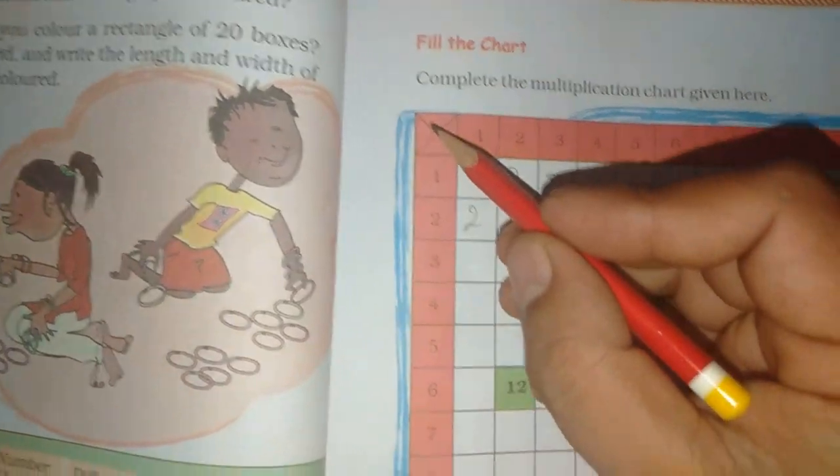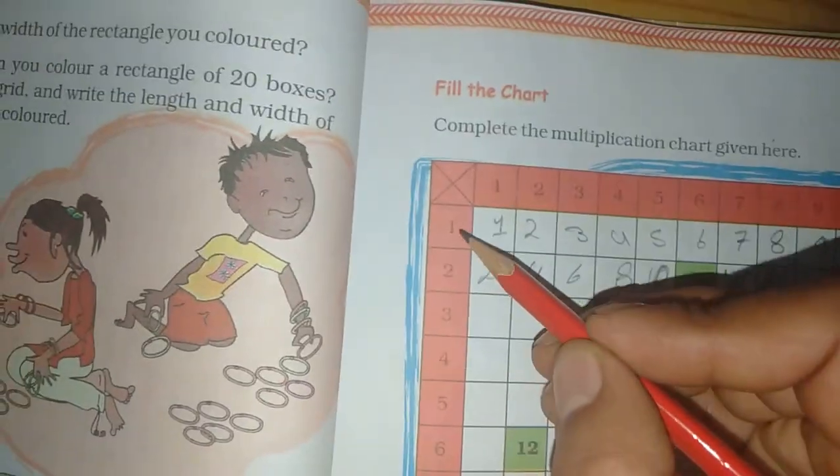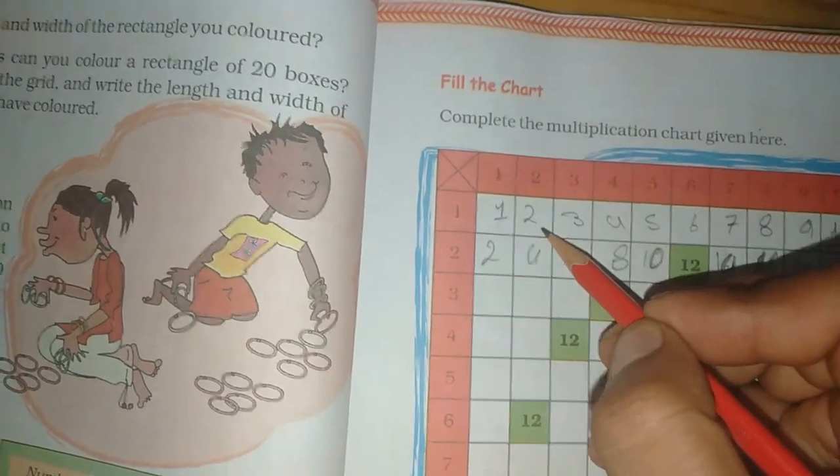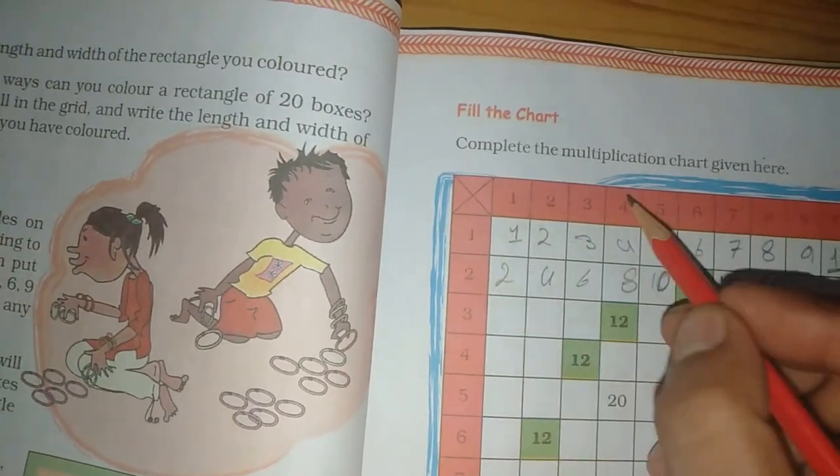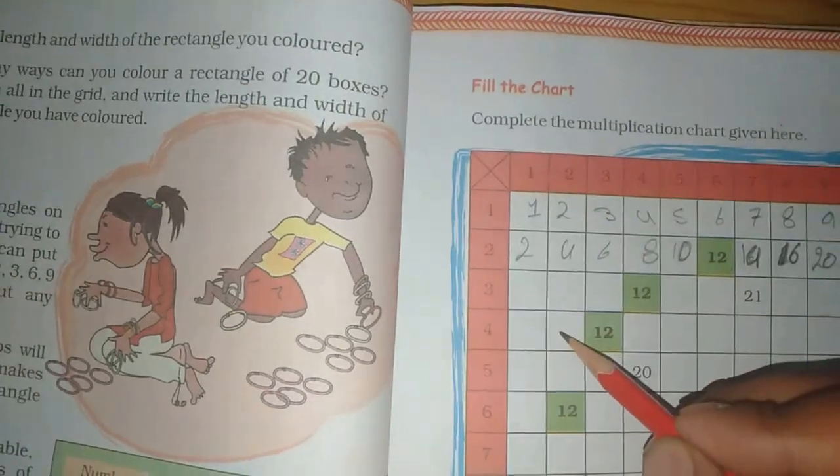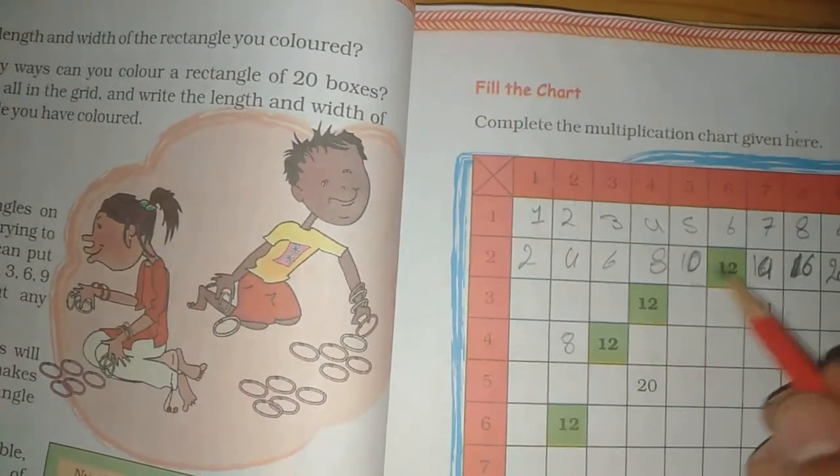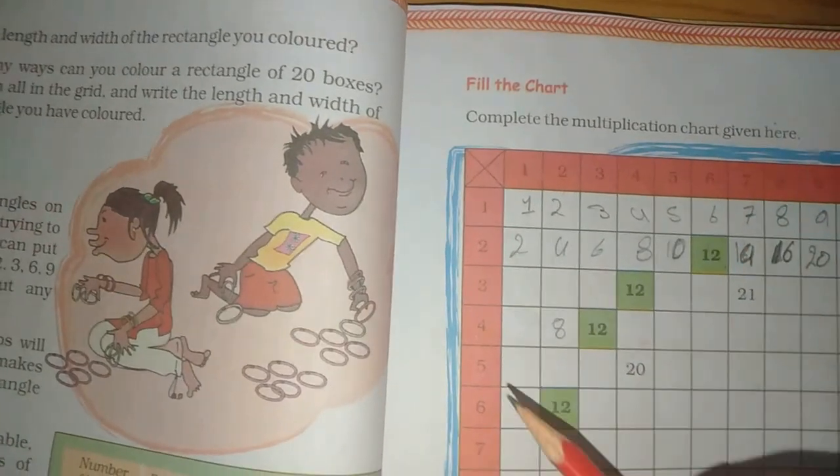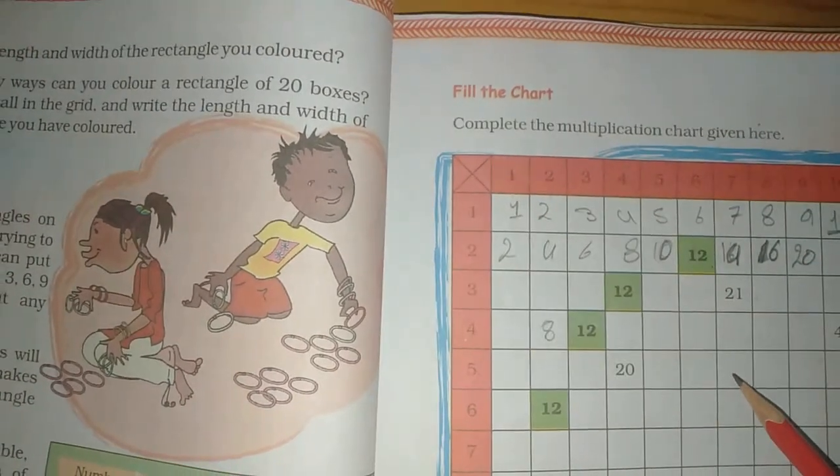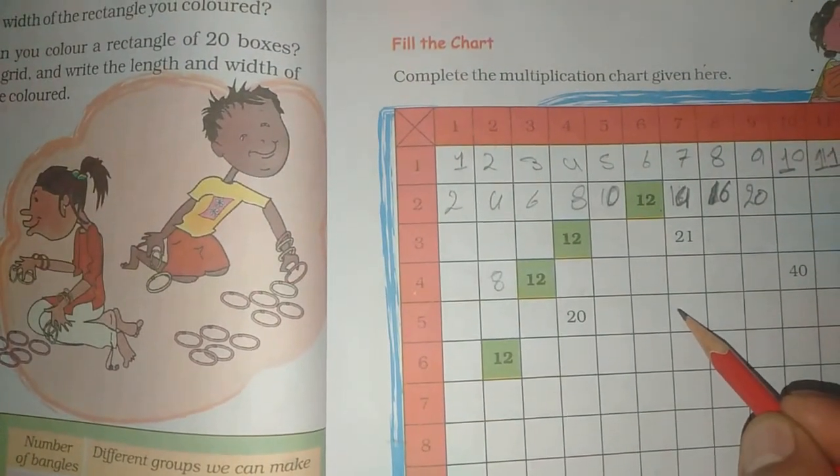You can fill in the chart. 1×3=3. 1×4, 4×2, 6×1, 4×2=8. 12. All of them have to add. 5×7. 5×7=35, 45.